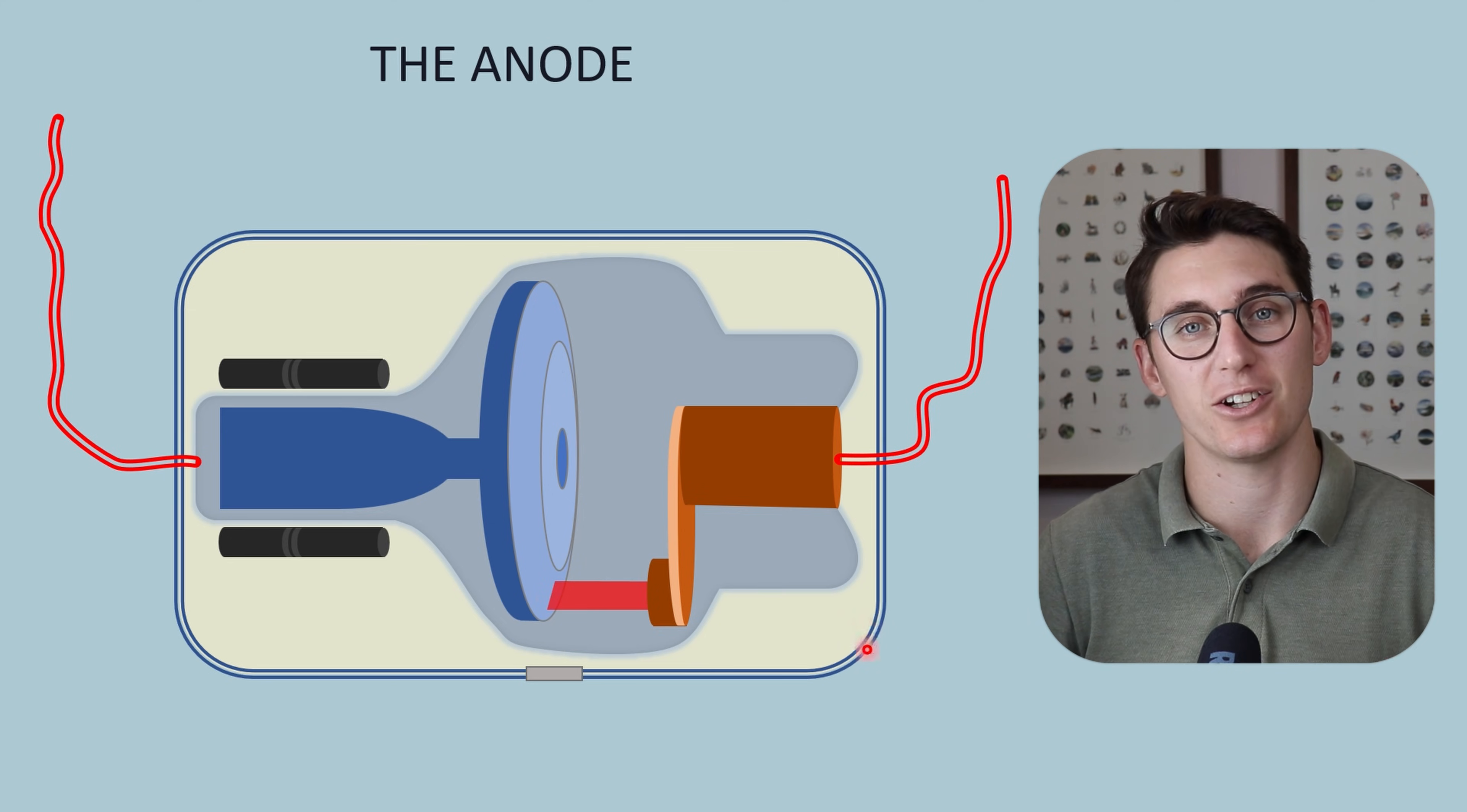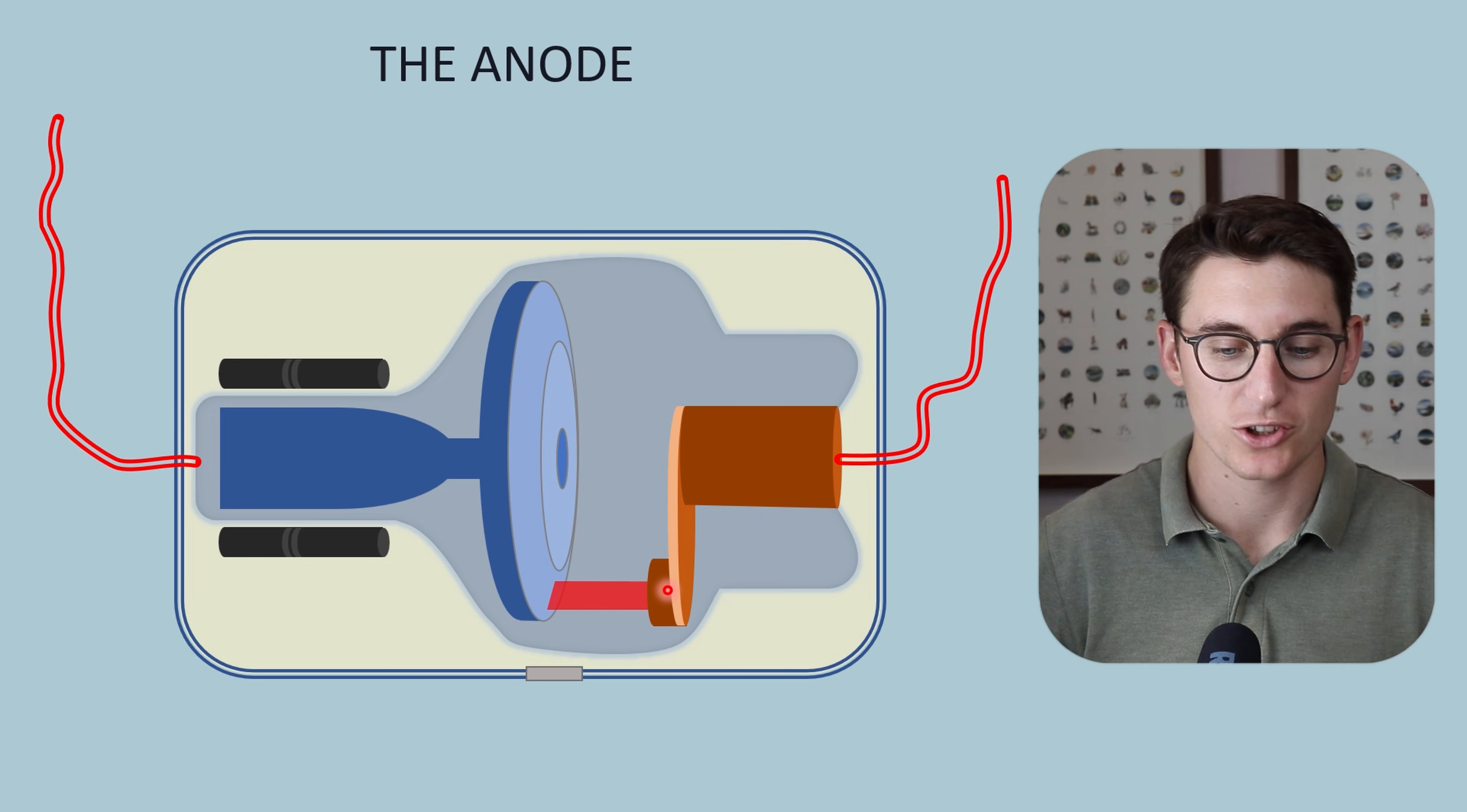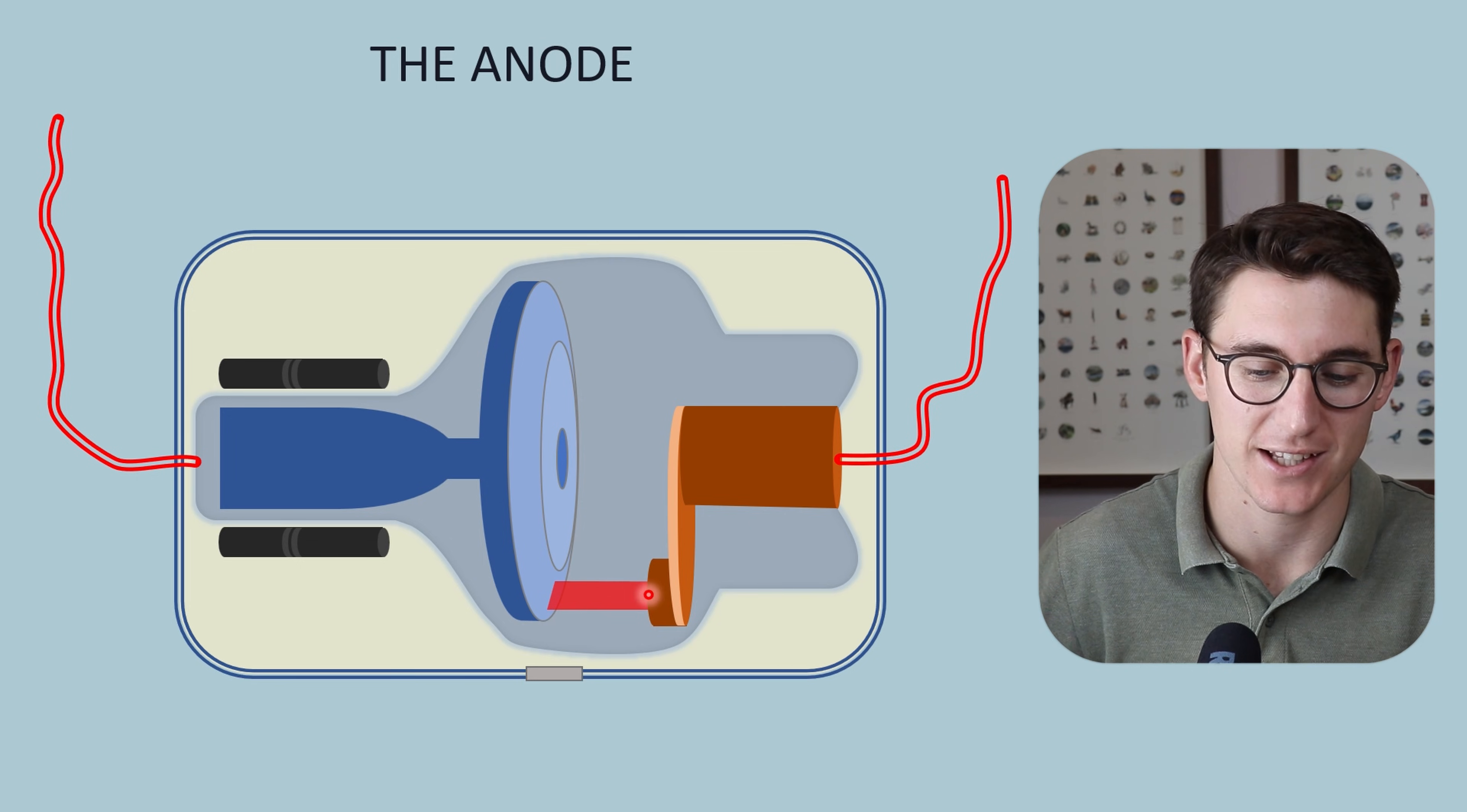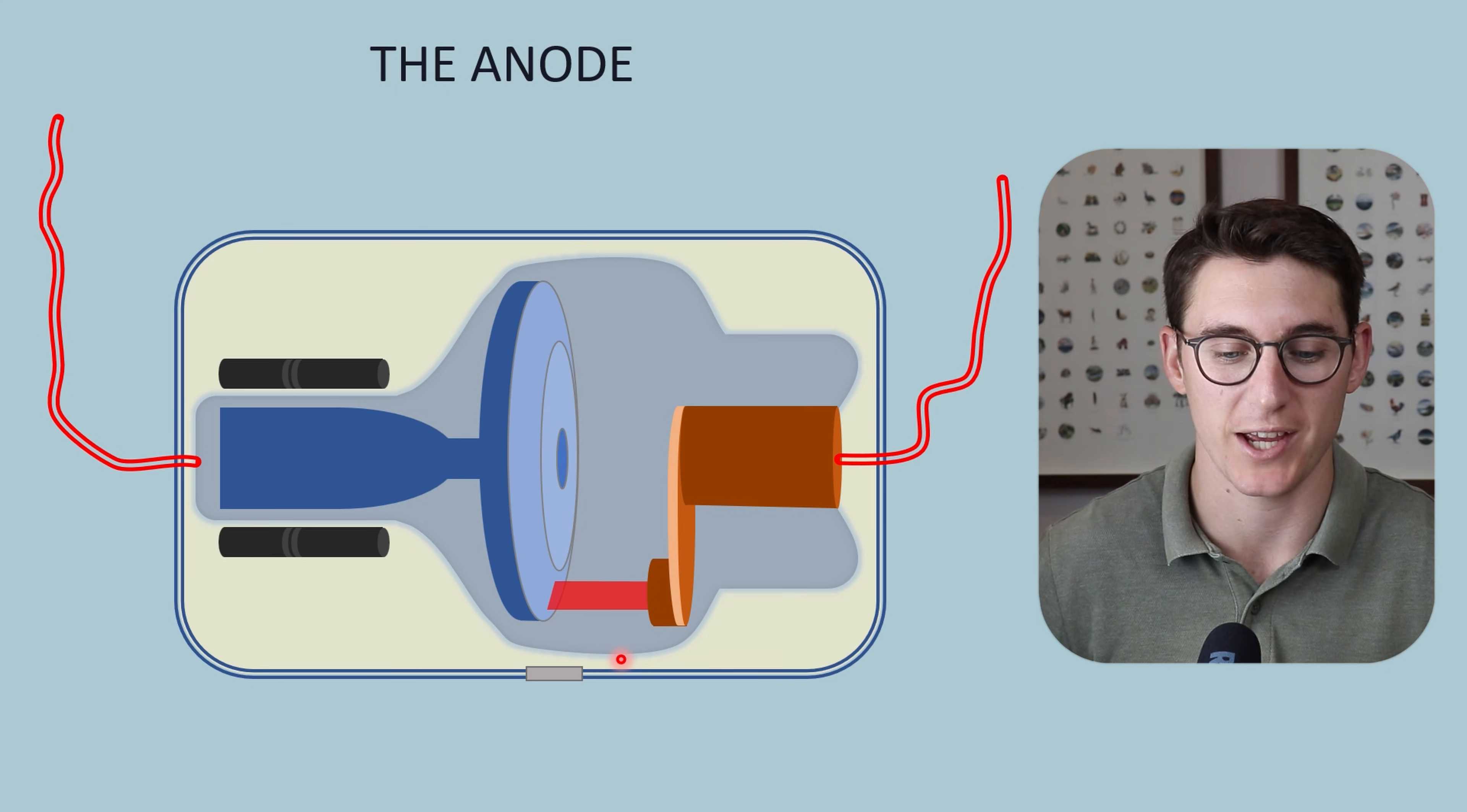The anode is made of tungsten and it's the interaction between these accelerated electrons and the tungsten that generates our x-rays. This actual focal spot is the site for x-ray production. The vast majority of the kinetic energy will be converted into heat. Only 1% of that energy will be converted into x-rays itself.